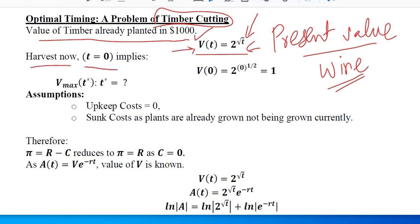One option is that we can harvest it now - that is, time has not passed and t equals zero. If we consider t equals zero, if we harvest now, it means that we will put t equals zero in this equation and the value will be equal to one unit.